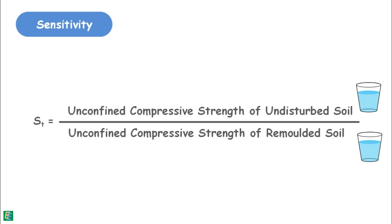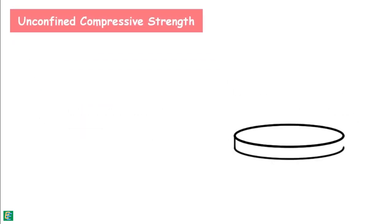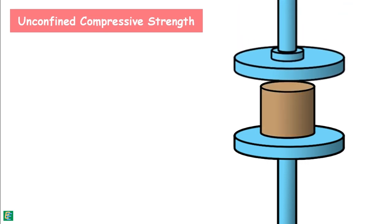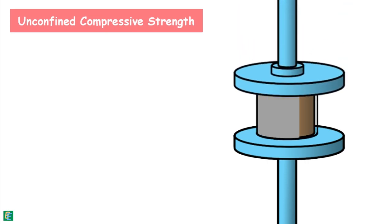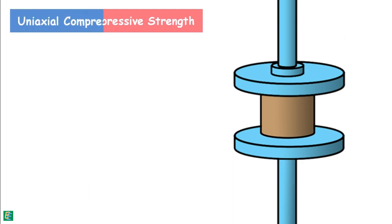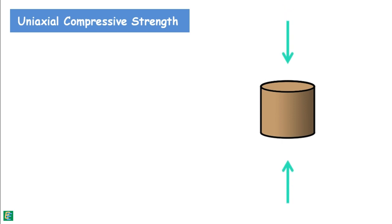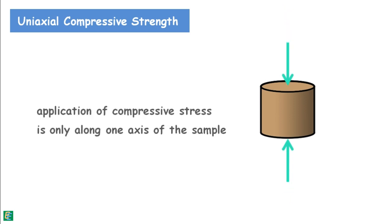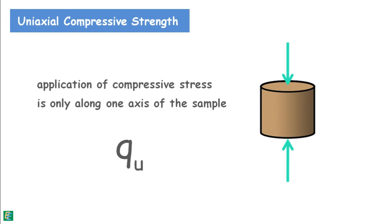The unconfined compressive strength is the maximum axial compressive stress that a cylindrical sample of material can withstand. There must not be any lateral stress. It is also known as uniaxial compressive strength because the application of compressive stress is only along one axis of the sample. We denote this compressive strength by QU.